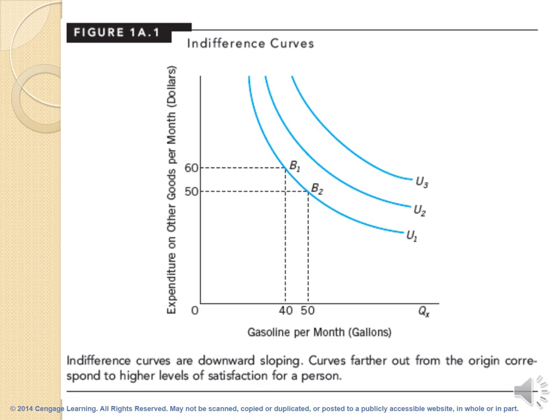As we see in the graph, we have two commodities: gasoline per month by gallons and expenditure on other goods per month. When we rank or put market baskets with the same utility, we will be on the same indifference curve, and we have many indifference curves in the indifference map. People can rank market baskets from the most to the least desired. If basket A is preferred to basket B, it means basket A is on a higher indifference curve than basket B.